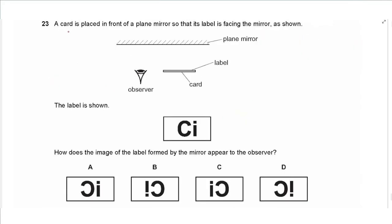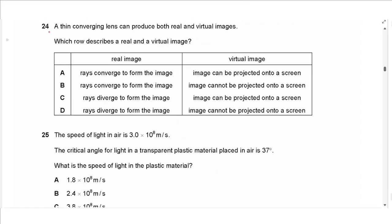Question 23: a card is placed facing a plane mirror. The image in a plane mirror is upright and laterally inverted, so the letters switch places and appear reversed left-to-right. The answer is C.